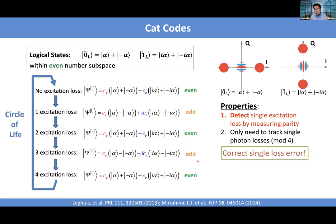The key property of the cat code is that it can detect single excitation loss by measuring parity. We only need to track the total number of photon losses modulo four. In principle, we can correct single photon loss errors by carefully interpreting the encoded information based on that tracking. This is one example of a bosonic code, which has a connection to the classical coding of phase-shift keying.